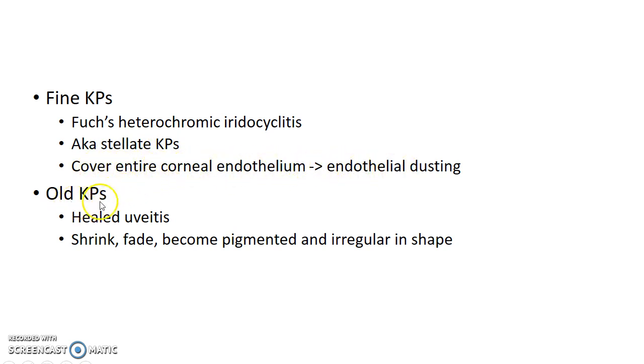Old keratic precipitates are seen in healed uveitis. They have a shrunken and faded appearance. They become pigmented and they are irregular in shape.